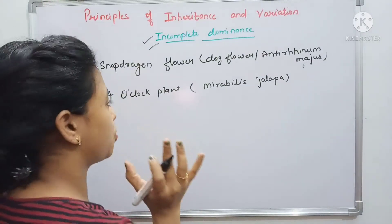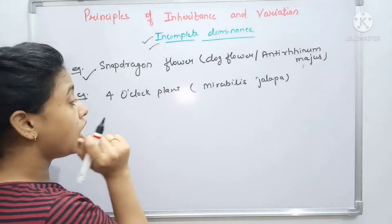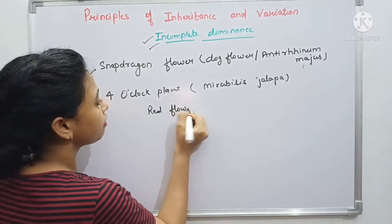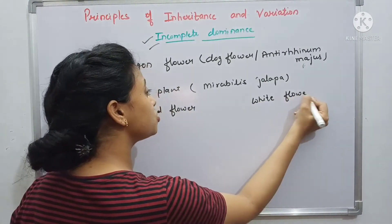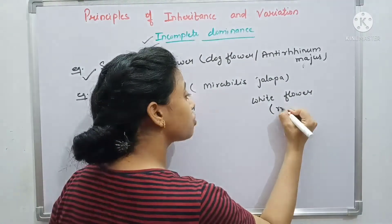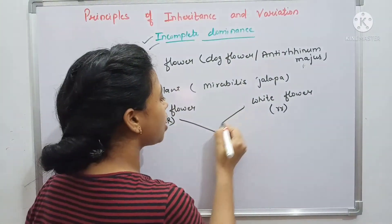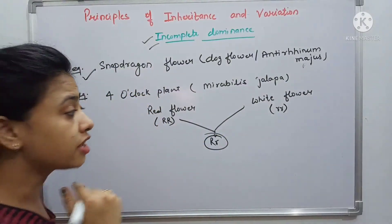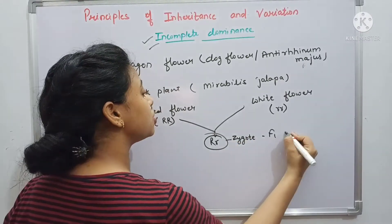In incomplete dominance, suppose we take the snapdragon flower. If there is a homozygous condition — suppose there is a red flower and the other one is a white flower, both in homozygous state — red is shown as capital R capital R, and white flower is shown as small r small r. Now if these are crossed, they will become a heterozygous state progeny, which we call the F1 generation.